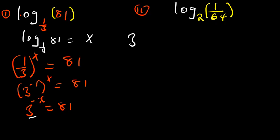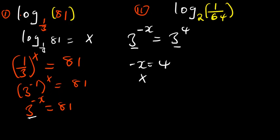That becomes 3 raised to the power negative x is equal to 3 raised to the power 4. When we reach this point, the bases are the same — you can equate the powers equal to each other. So, negative x would be equal to 4. Therefore, x is equal to negative 4.